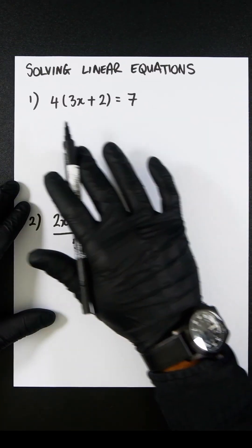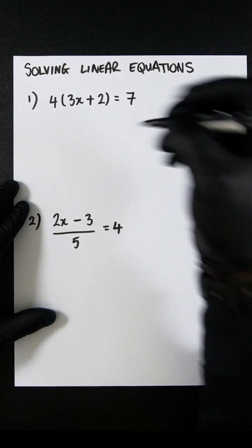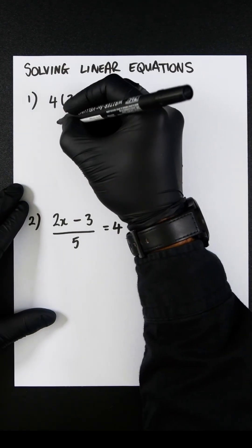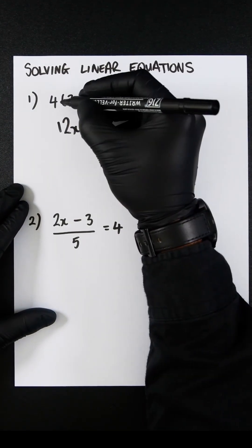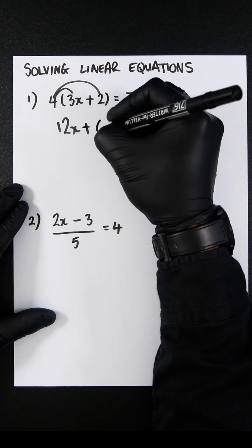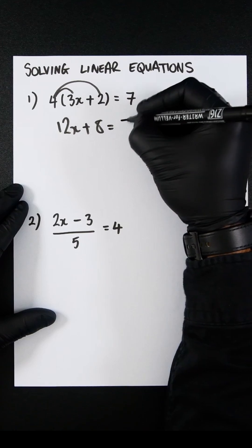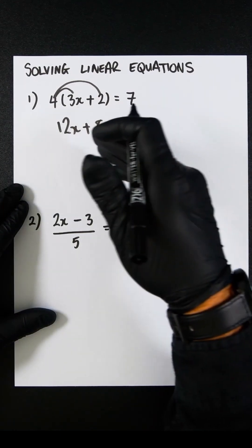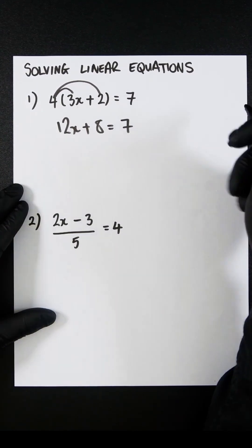So the first thing we're going to do is expand the brackets on the left-hand side. So 4 times 3x is 12x, and 4 times 2 is 8, which equals 7. Let's now minus 8 from both sides.